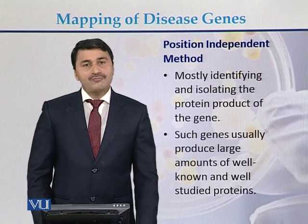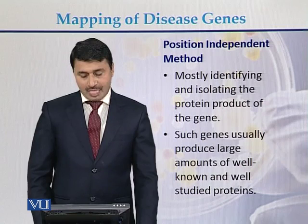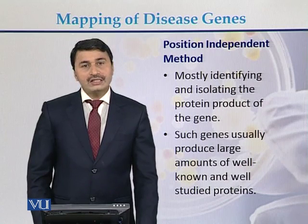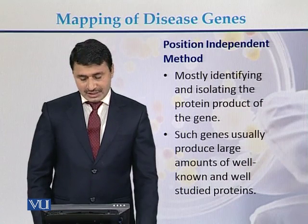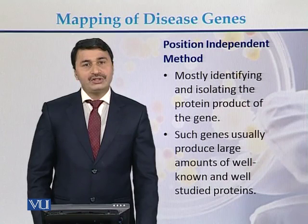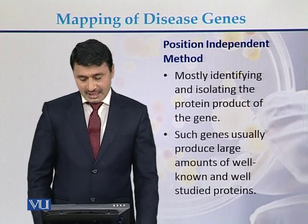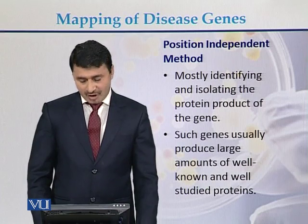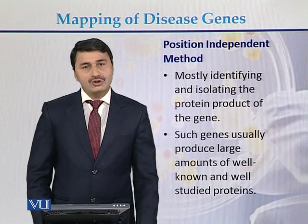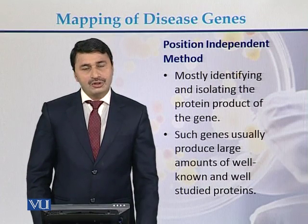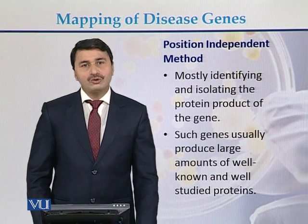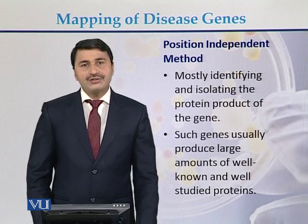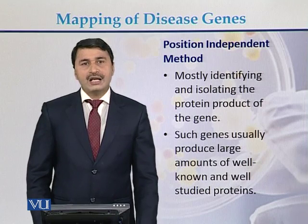In the case of the position independent method, most genes have been isolated with the help of proteins. Such genes usually produce large amounts of proteins and also produce well-studied proteins. So with the help of those proteins, disease genes are identified.